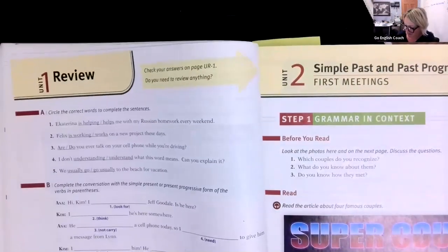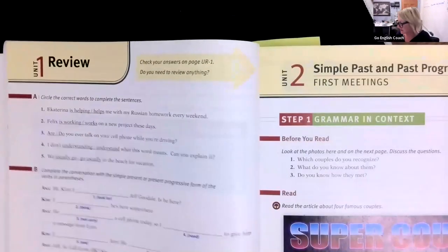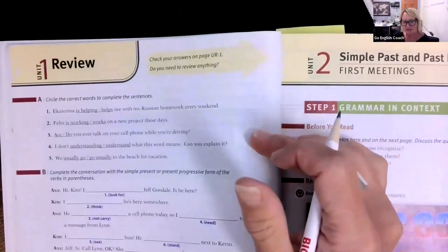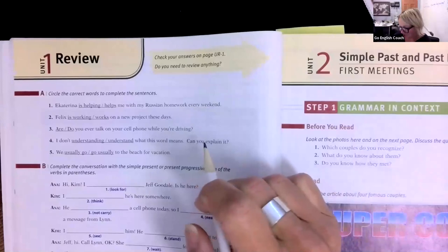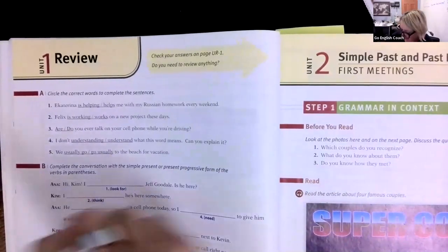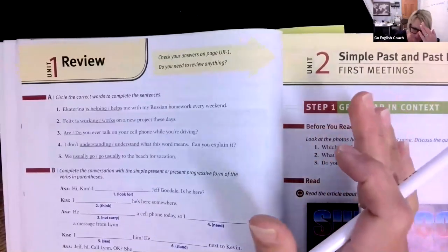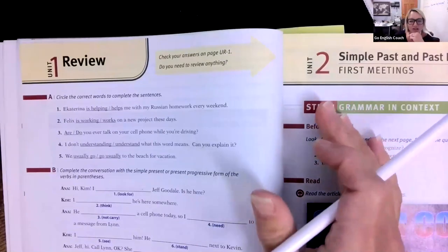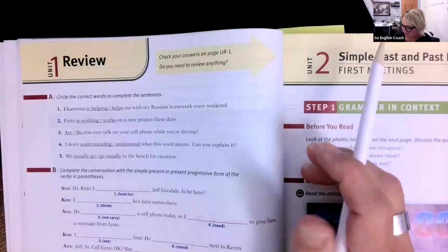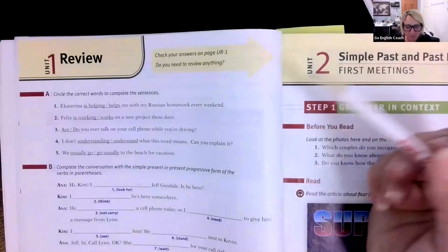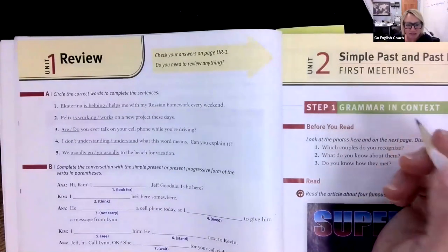Here we have our unit review. We're working to finalize and solidify that you've learned everything we need to cover. You're testing your own knowledge, and if you don't do well, go back and watch some of the videos and practice a bit more. Why don't you pause the video right now and do these five exercises, and then we'll come back together and work on them.